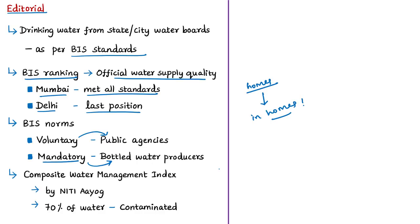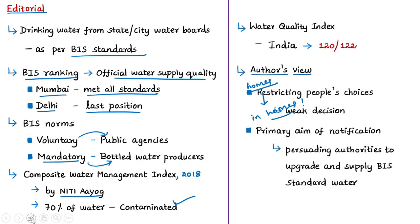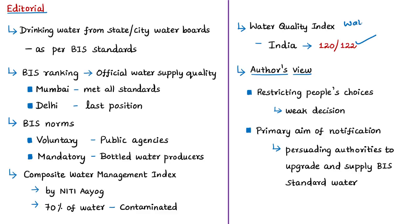Most of the country lacks access to piped water, and available water supply is often contaminated — as confirmed by NITI Aayog's Composite Water Management Index, which found nearly 70 percent of India's water supply is contaminated, placing India at 120th among 122 countries in the water quality index released by the NGO WaterAid. The author therefore argues that it is not advisable to restrict people's choices for ensuring portable drinking water through RO processes, and suggests the draft notification's primary aim should be persuading authorities to upgrade supply to BIS standards rather than imposing restrictions on household users.